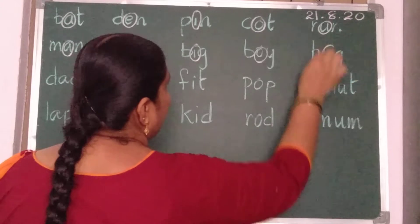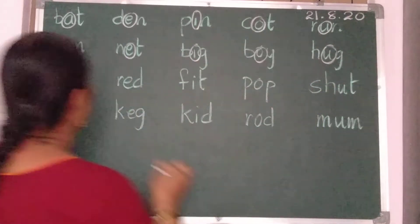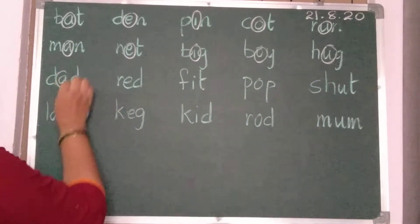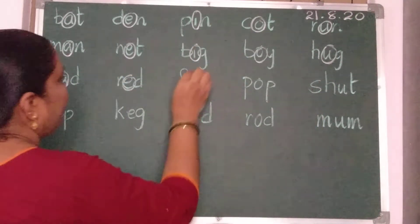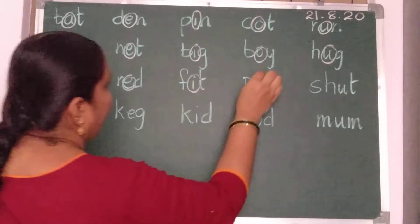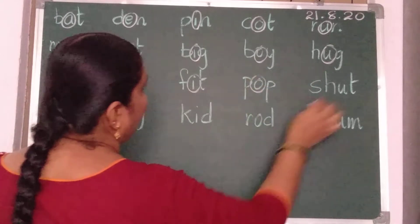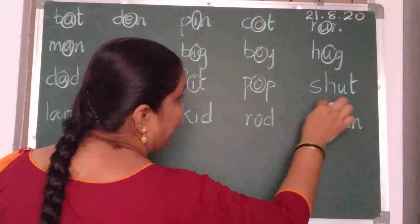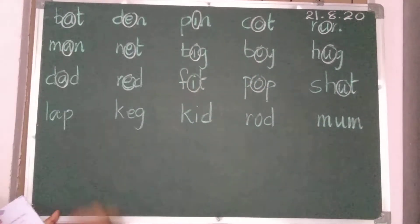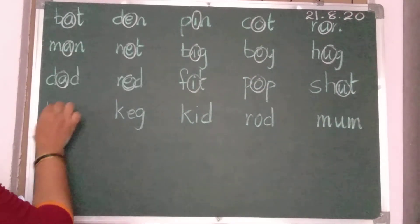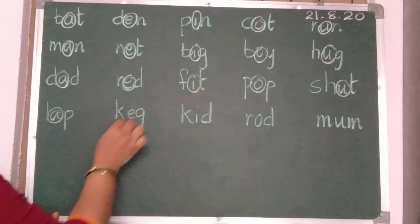Vowels you should circle. R, E, D — red. F, I, T — fit. P, O, P — pop. S, H, U, T — shut. U is a vowel. L, A, P — lap.